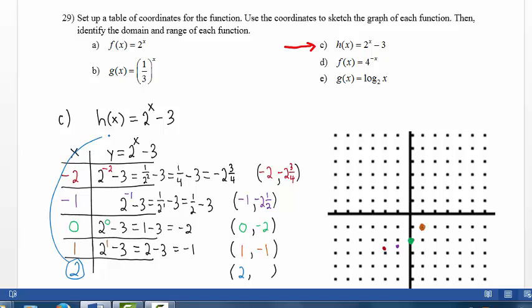When x equals 2, y is 2 raised to the 2 power minus 3. 4 minus 3 equals 1. We plot 2 comma 1. I don't have room to show it here, but if you plugged in x equals 3, 2 to the third power is 8, minus 3 is 5. We would plot 3 comma 5.